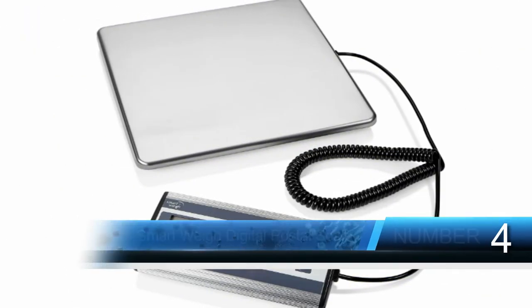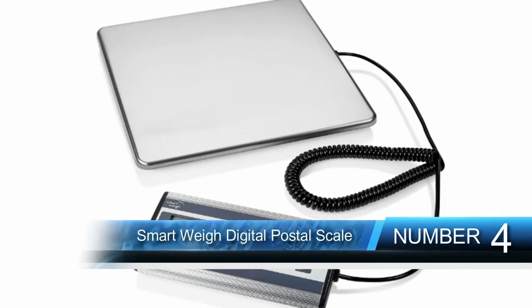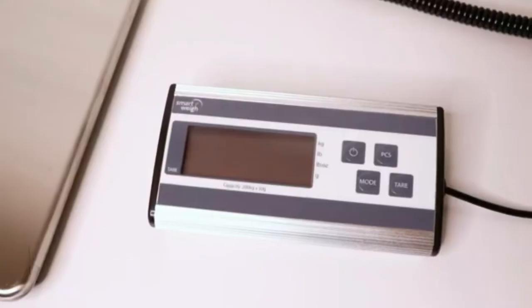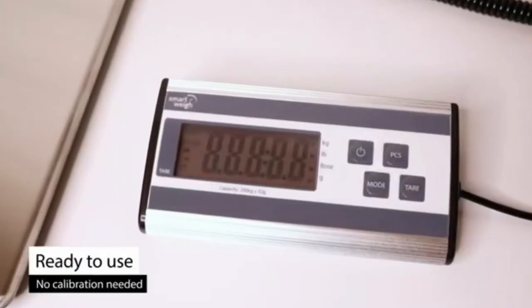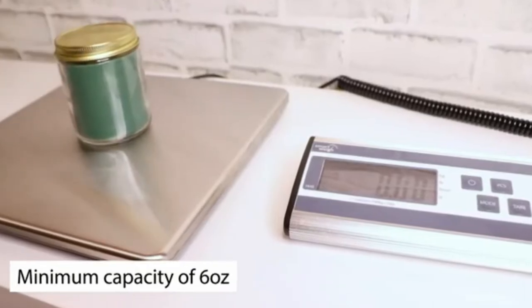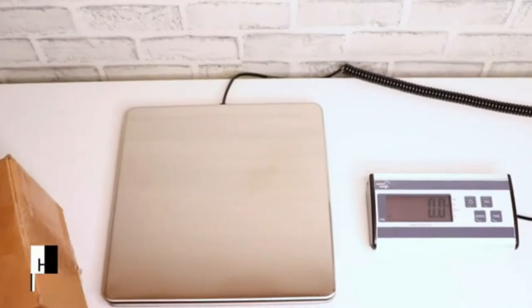Number 4: SmartWay Digital Heavy-Duty Shipping and Postal Scale with a huge capacity of 440 lbs. SmartWay Postal Scale is ideal for users that need to weigh bulkier items with ease. While holding large packages, the long extendable cord ensures users can read the package weight on the LCD screen easily, no matter how big the item might be.